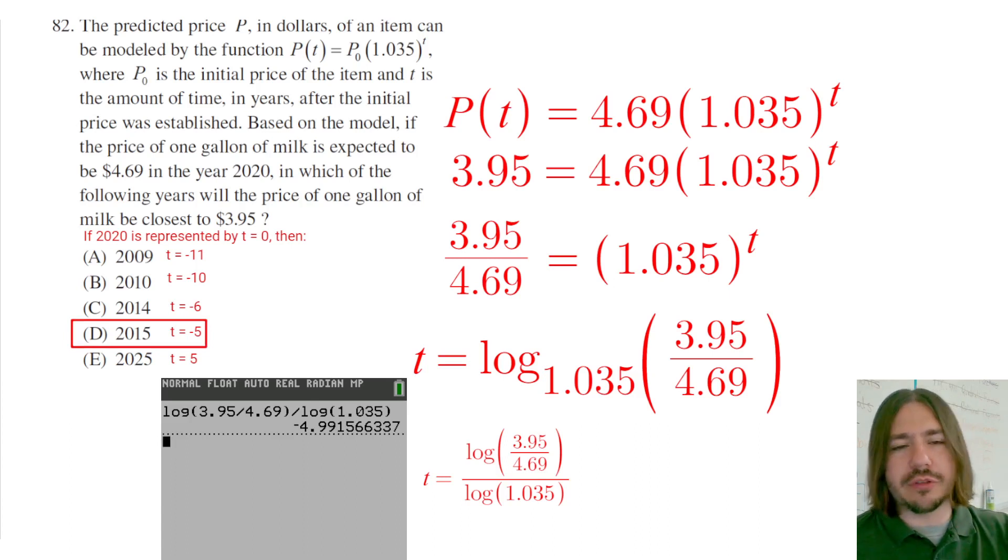And if you were going through the answer choices and just kind of plugging in these different t values, once you get there, I'll just show you how that actually would work. If I type in 4.69 times 1.035 to the power of negative 5, I'm going to get a number that's really close to $3.95. And you can see that this would round to $3.95.